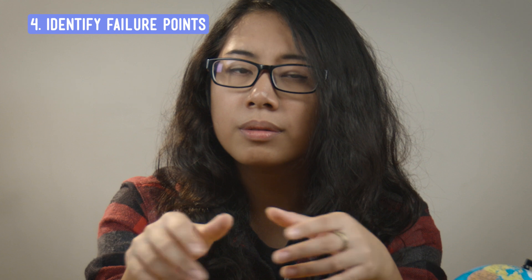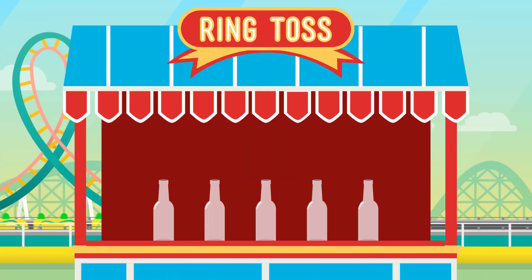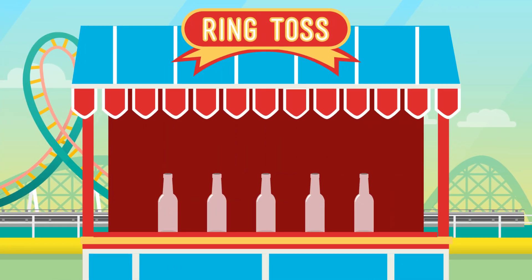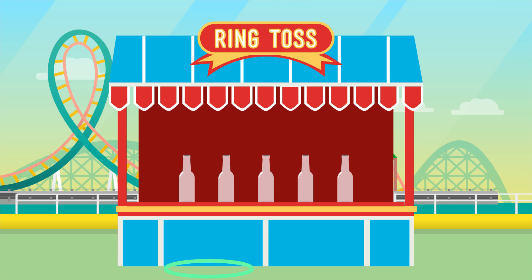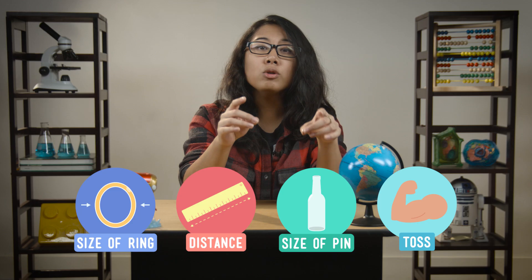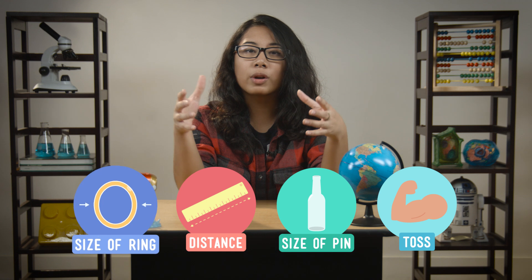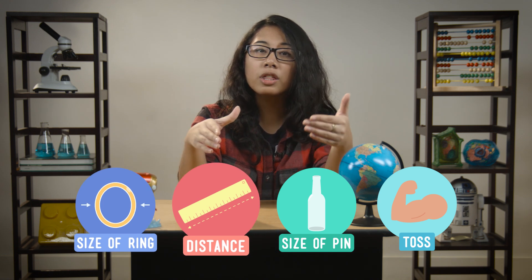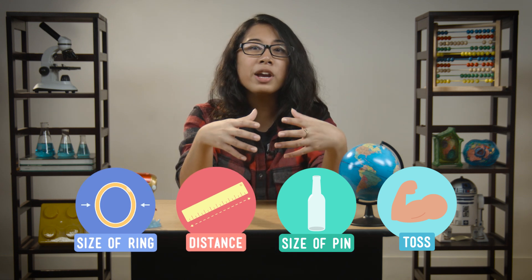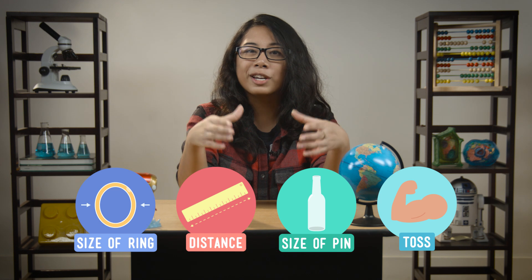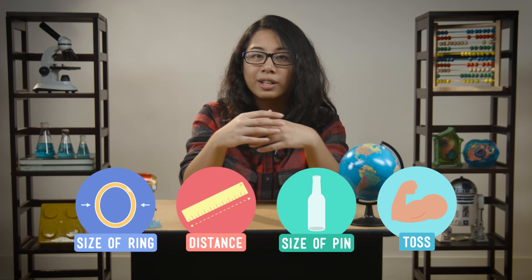Now we need to see if we can find any failure points. Let's try moving way far away from the pin. We'll toss and we'll miss. So there we have a failure point. The solution of using a bigger ring works, but once we change another variable and get too far away from the pin, a bigger ring isn't going to meet our criteria of a successful solution.